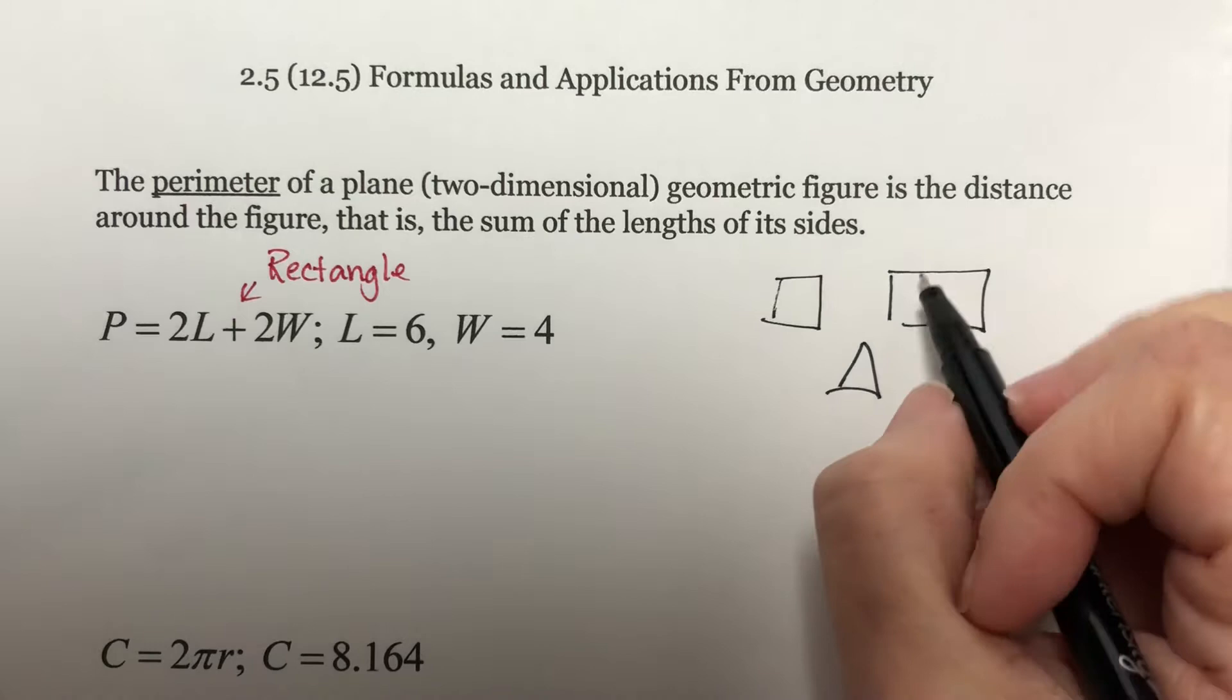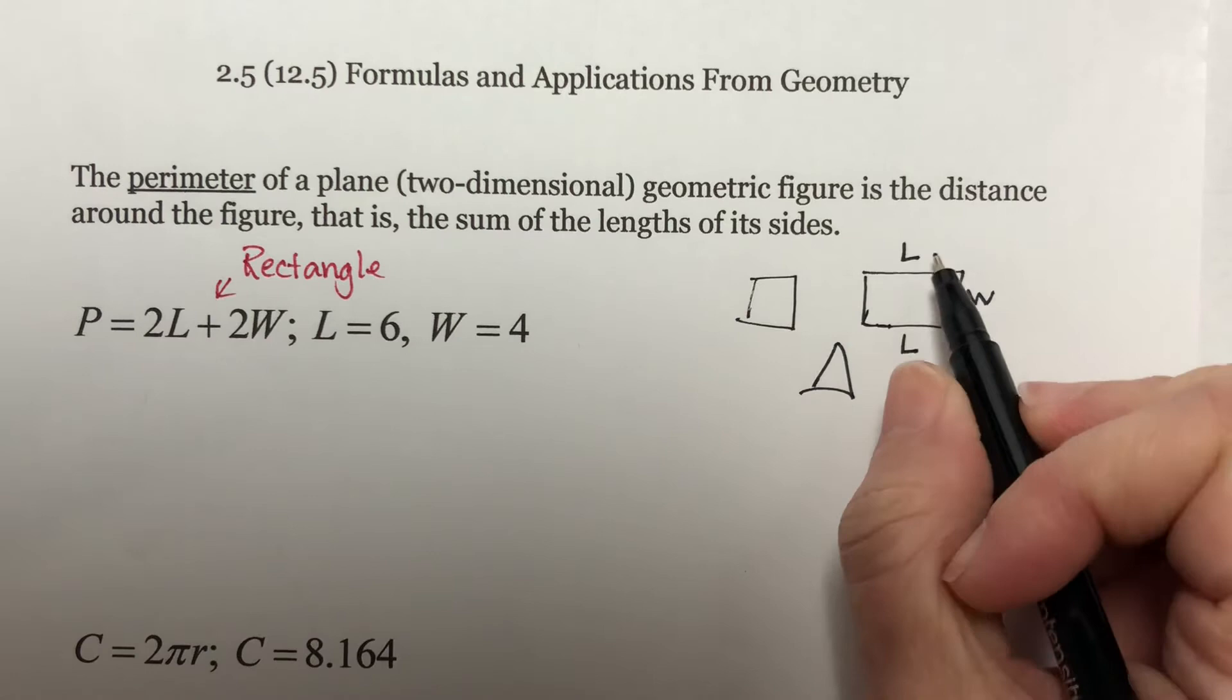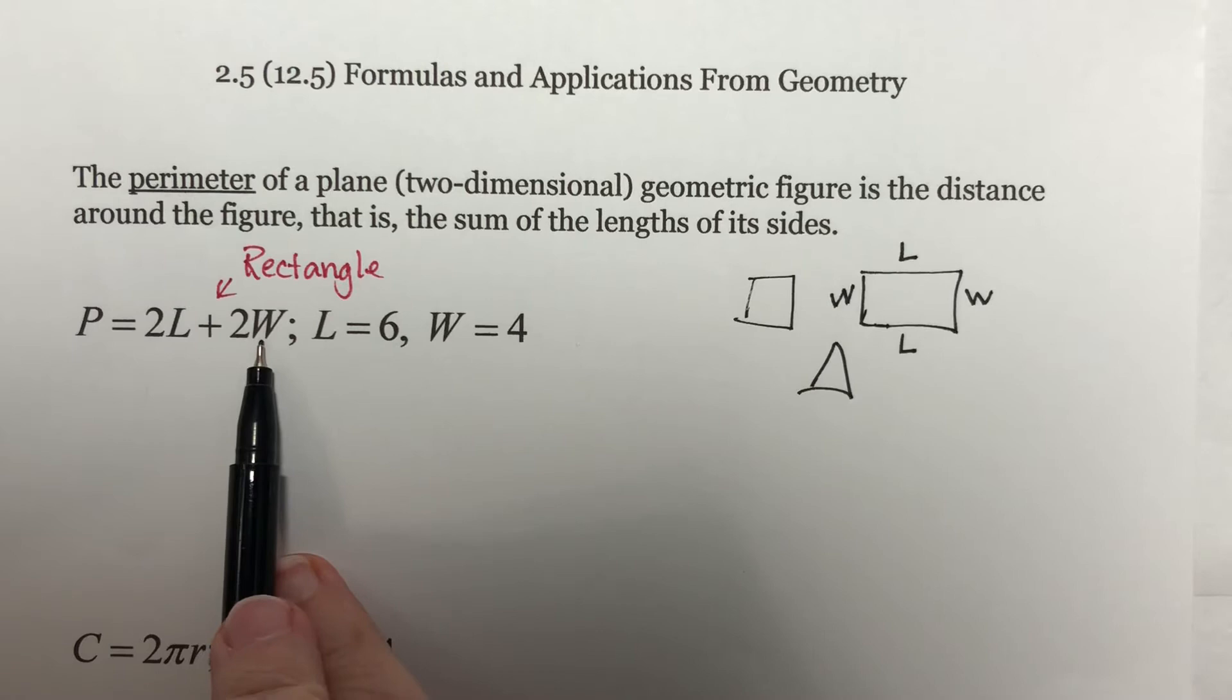This is more for future reference than it is for this section. If we have a rectangle, and this is the length, and this is the width, what we know about rectangles is if this is L, this is also L, because they have the same distance on both sides. And right here as well. And if we go to add them all up, we would have L plus L, which is 2L, plus W plus W, which is 2W. Okay, so this is the perimeter of a rectangle.